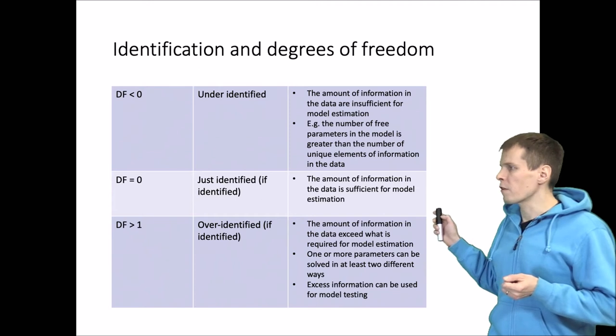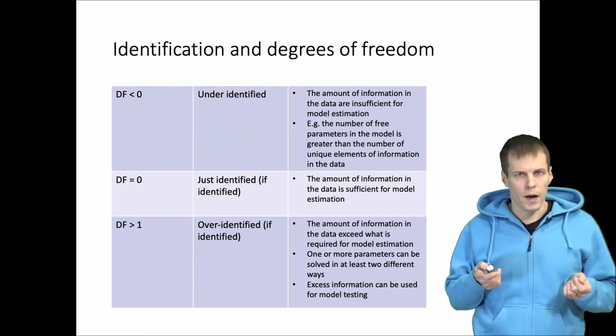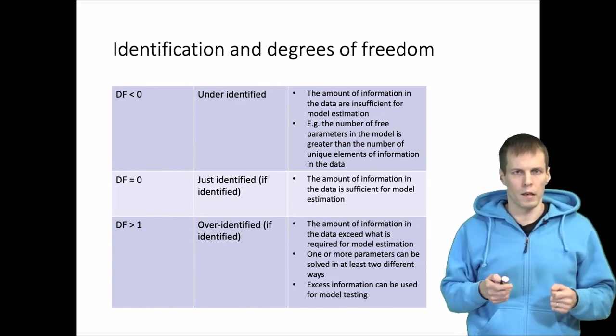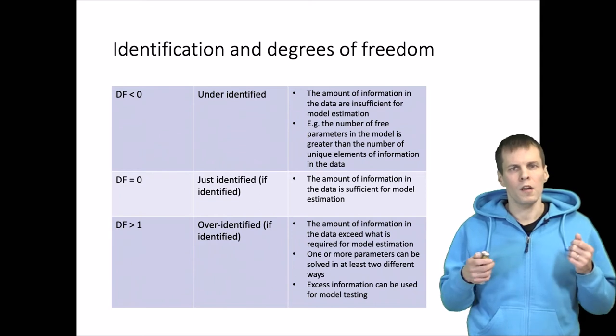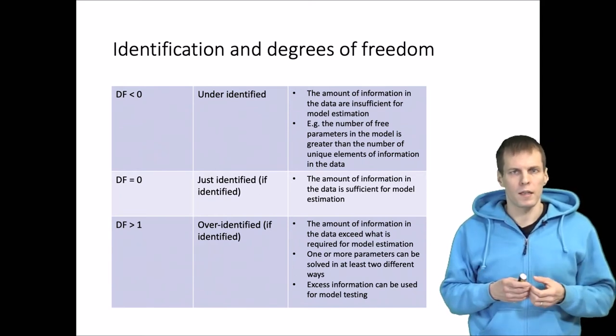When degrees of freedom is negative, the results from statistical software are completely untrustworthy. Then we have the case of degrees of freedom 0, called just identified, assuming the model is identified. Here we have equal numbers of parameters and things that we observe.